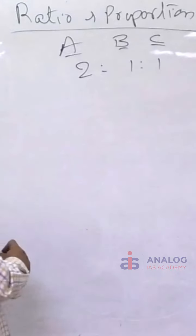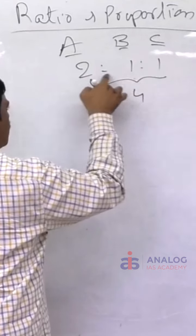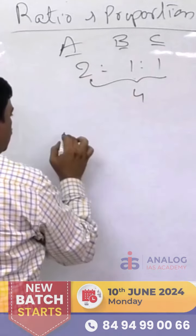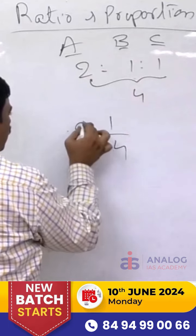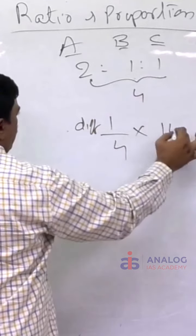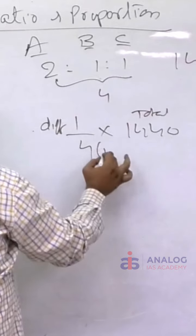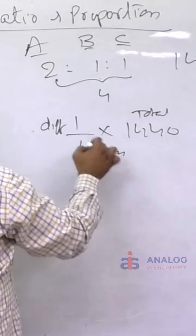So, difference of the shares out of the total is how much? The total is how much? 4. Difference is how much? 1 part. So, what we need is 1 out of 4. Whatever the difference is, 1 out of 4 into the total amount, 1440. 1440 total here, this is also total. Total, total cancels, you will get the actual difference.